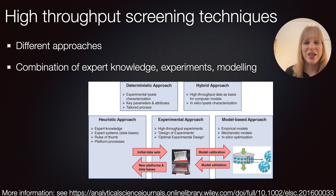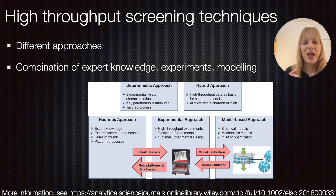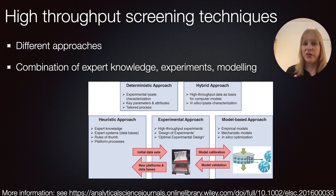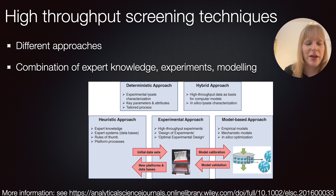When is something considered high-throughput? If we're looking for hits on new drug compounds, we look at thousands or millions of compounds in libraries. But that's not necessarily the kind of high-throughput I'm talking about here — even a 96-well plate, or even less than that, can be considered high-throughput in this context.